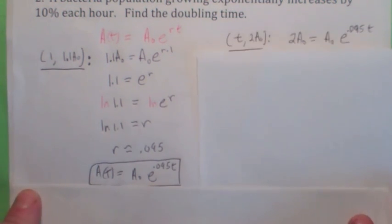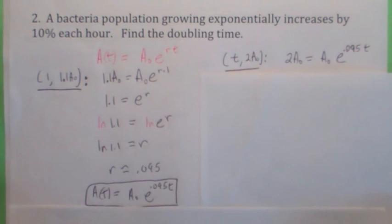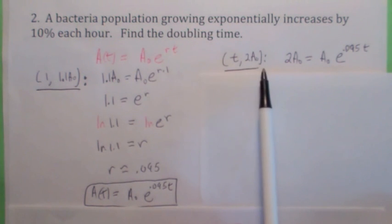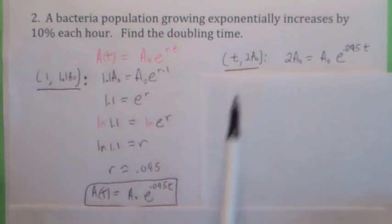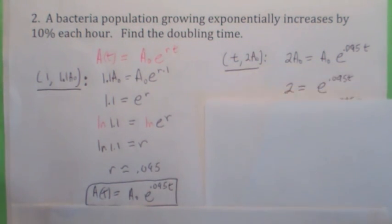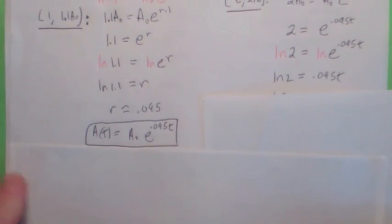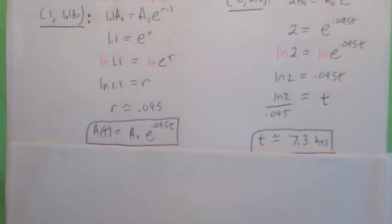To find the doubling time, recall it's defined as the time for the amount to double. If you start with a-zero, you'll have 2 times a-zero when it doubles. Set a of t equal to 2a-zero, the a-zeros cancel, and you get 2 equals e to the 0.095t. Taking the natural log of both sides gives ln(2) equals 0.095t. Dividing by 0.095, you get t equals approximately 7.3 hours.